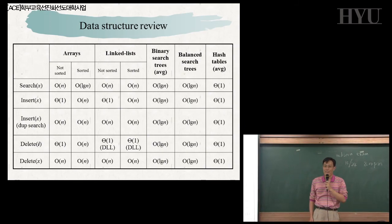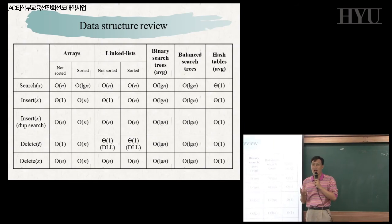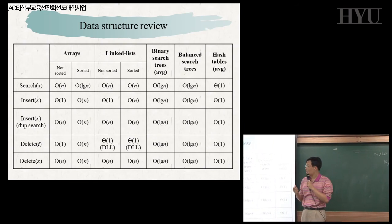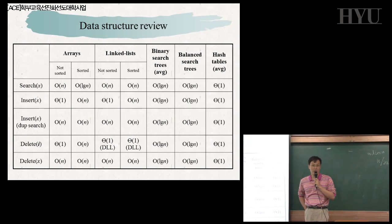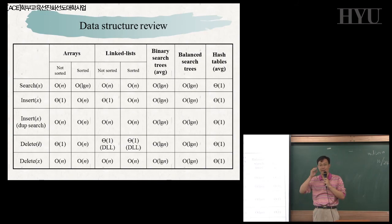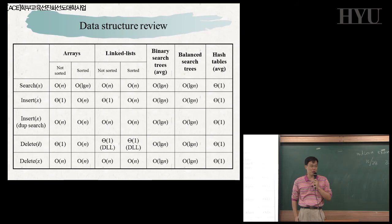But if the array is sorted, then the search time is reduced to O(log n). Can you explain why? Because we can use binary search. Yes, right. Now we can use binary search and it takes O(log n) time.